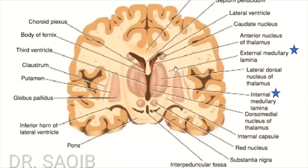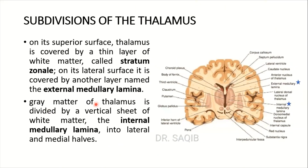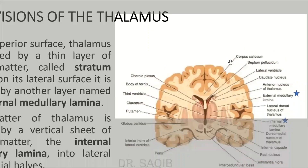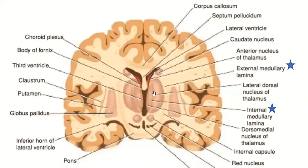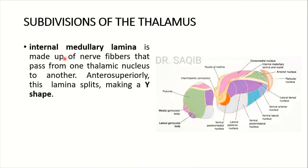You see the external medullary lamina here, and here is the stratum zonale. The grey matter of the thalamus is divided by a vertical sheet of white matter - the internal medullary lamina - into lateral and medial parts. This is the internal medullary lamina, dividing the thalamus into right and left parts which have their respective medial and lateral nuclei. The internal medullary lamina is made up of nerve fibers that pass from one thalamic nucleus to another.